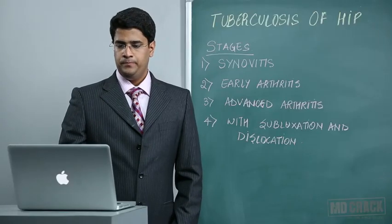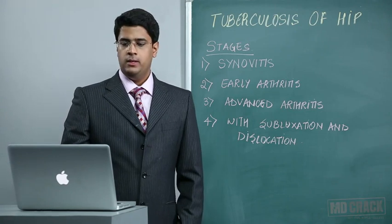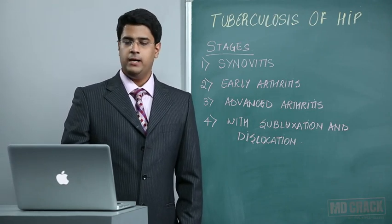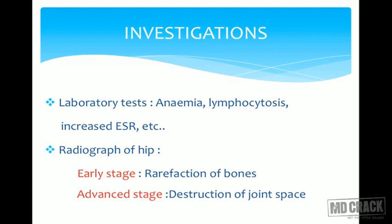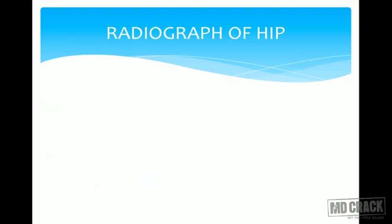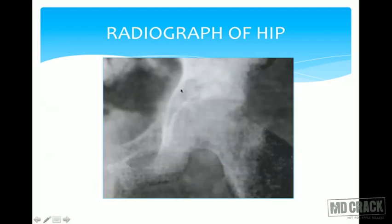Coming to investigations: routine laboratory tests include hemoglobin for anemia, WBC count, ESR, and C-reactive protein. Radiographs of the hip joint — pelvis with both hips and the affected hip — are always taken in anteroposterior and lateral views. In the early stages you see rarefaction of bones looking hazy, while in advanced stages complete destruction of the joint space is seen. This X-ray shows drastically reduced articular joint space in a tuberculosis hip.